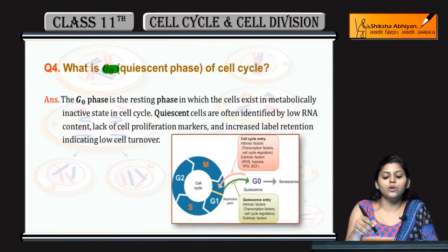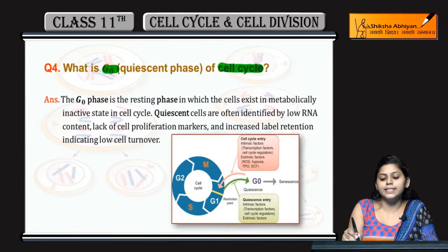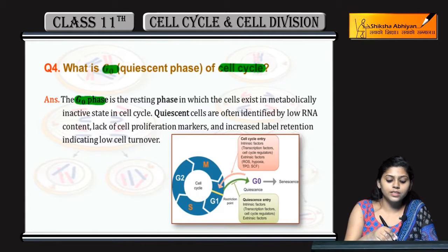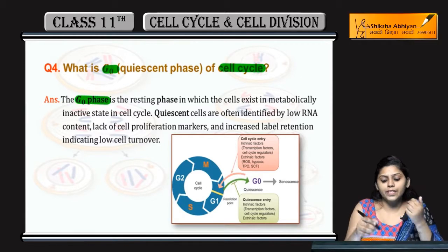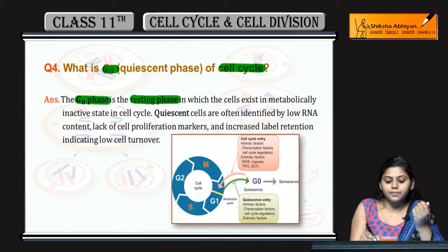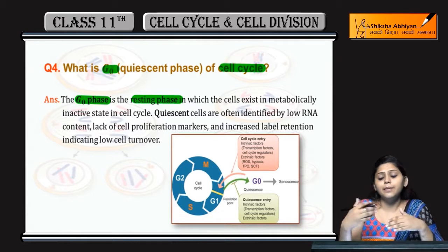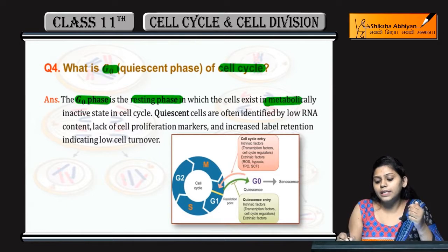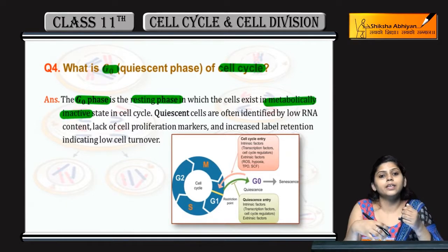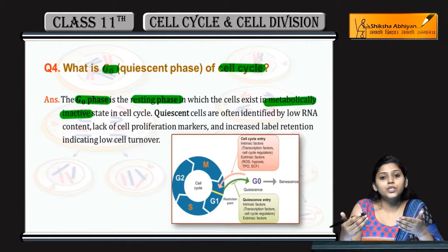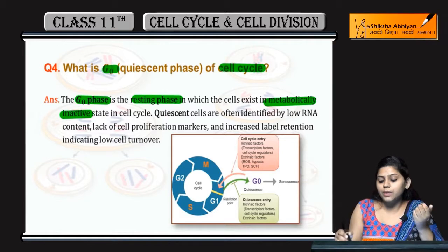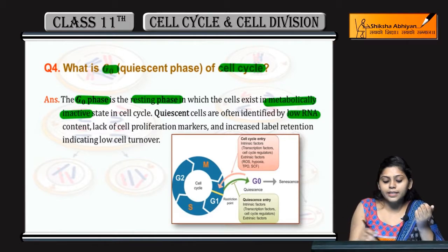What is G0, or the resting phase of the cell cycle? G0 phase is a resting phase. Is the cell metabolically inactive during this time? Yes, because it has low RNA content.